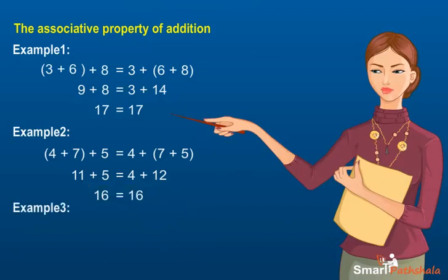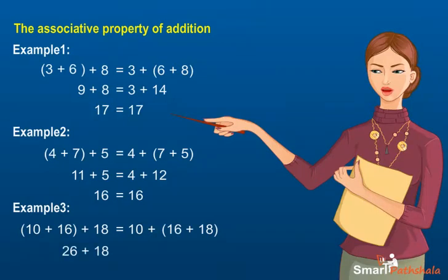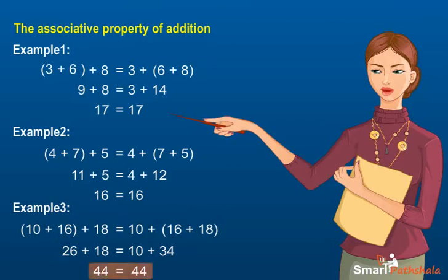Example 3: (10 + 16) + 18 = 10 + (16 + 18). So, 26 + 18 = 10 + 34, and 44 = 44. Notice that the sum is the same no matter what way you group the addends.